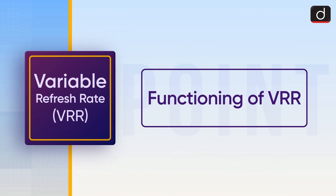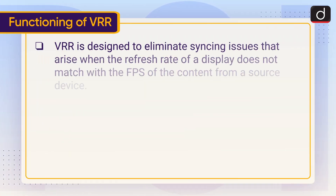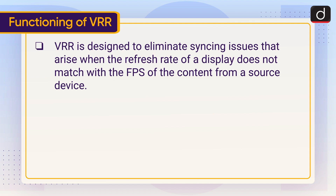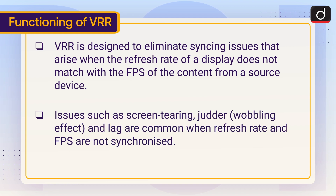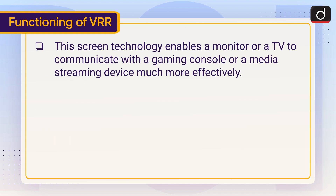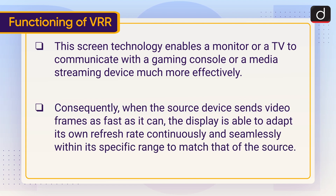Let's discuss the functioning of VRR. VRR is designed to eliminate syncing issues that arise when the refresh rate of a display does not match with the FPS of the content from a source device. Issues such as screen tearing, judder or wobbling effect, and lag are common when refresh rate and FPS are not synchronized. This screen technology enables a monitor or TV to communicate with a gaming console or a media streaming device much more effectively. Consequently, when the source device sends video frames as fast as it can, the display is able to adapt its own refresh rate continuously and seamlessly within its specific range to match that of the source.